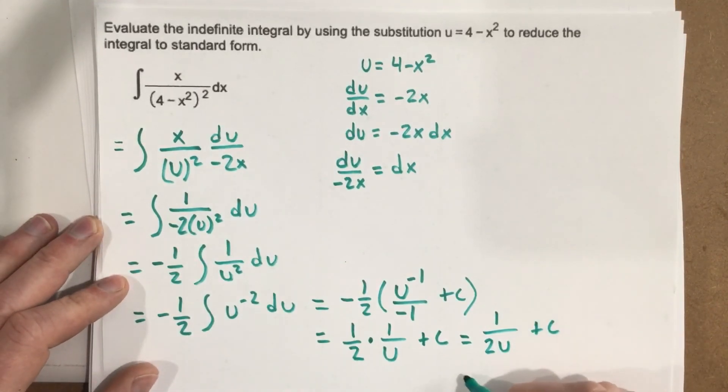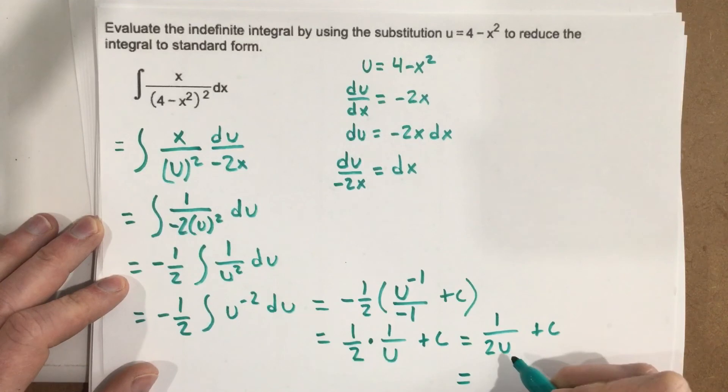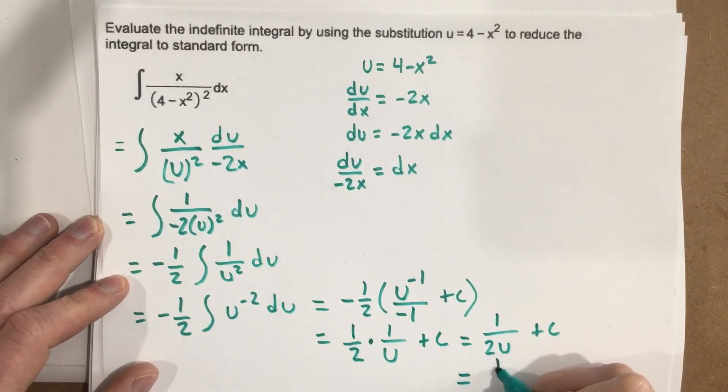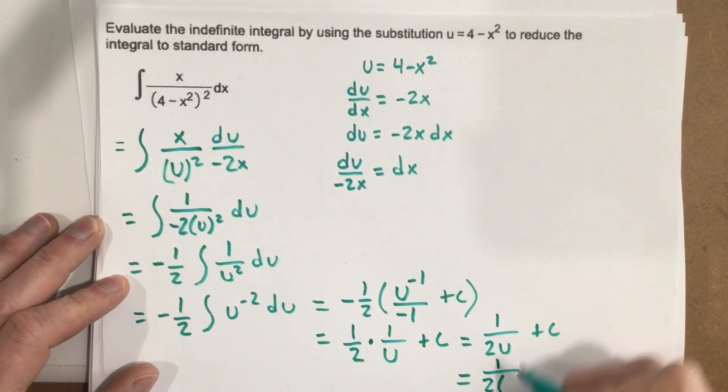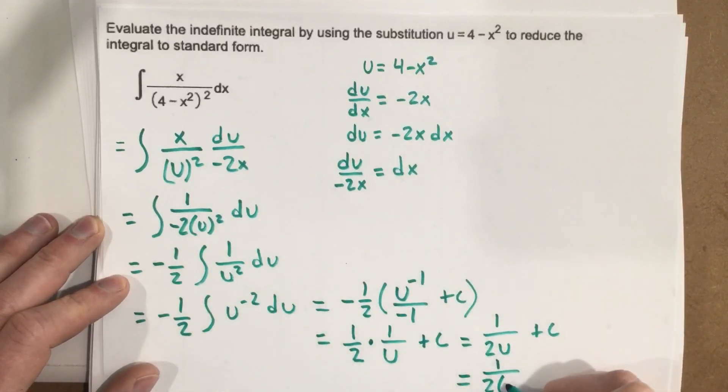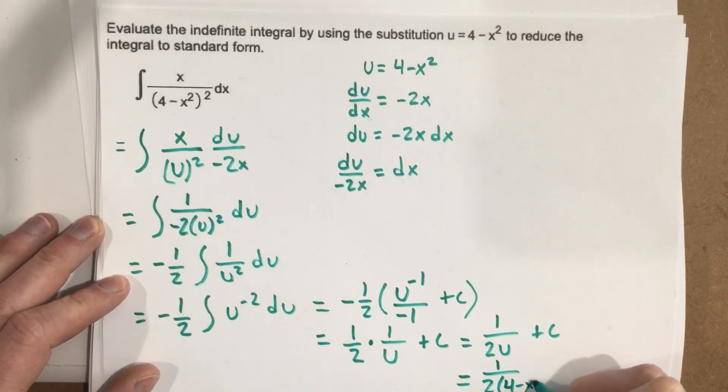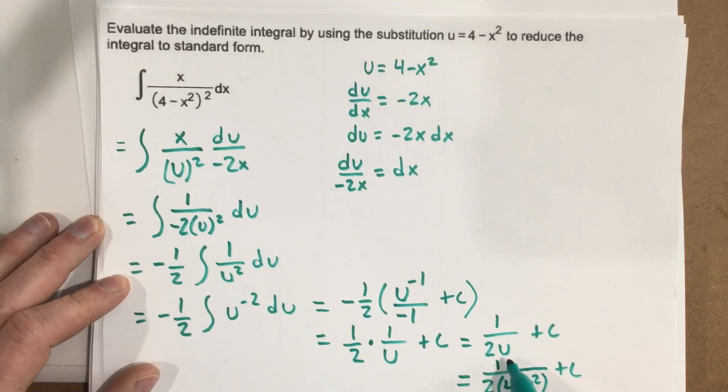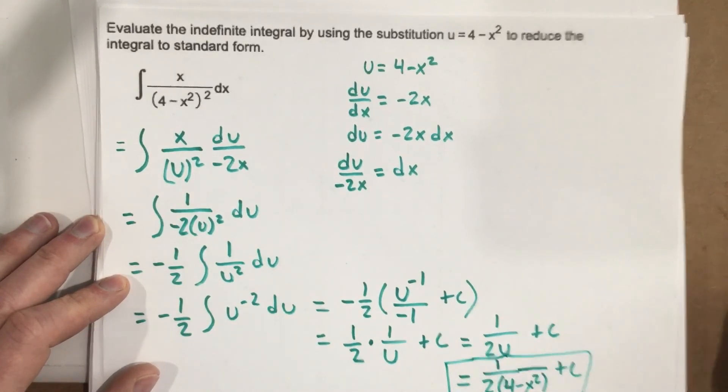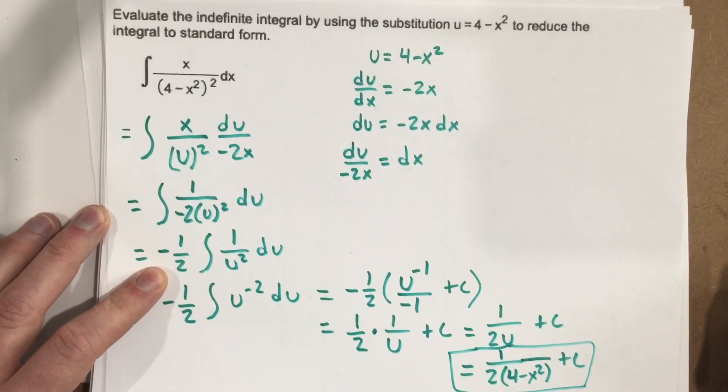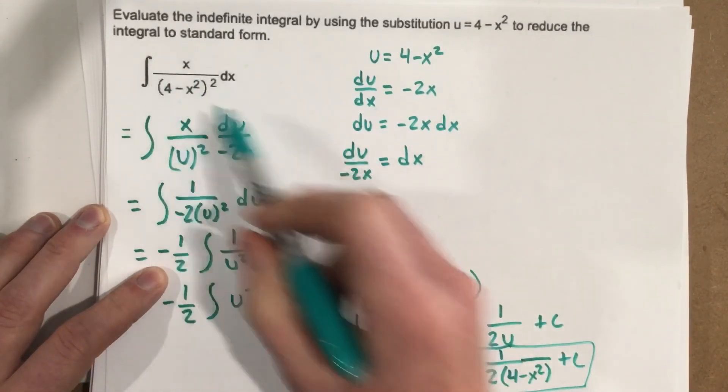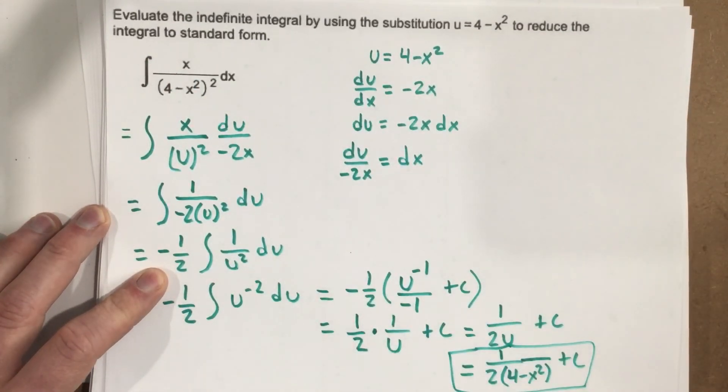And the last step we want to actually substitute in the u. So we have 1 over 2, and then we have 4 minus x squared, which was u, plus c. And we could distribute there if we wanted to, but this is the integral for this function with a u-substitution of 4 minus x squared.